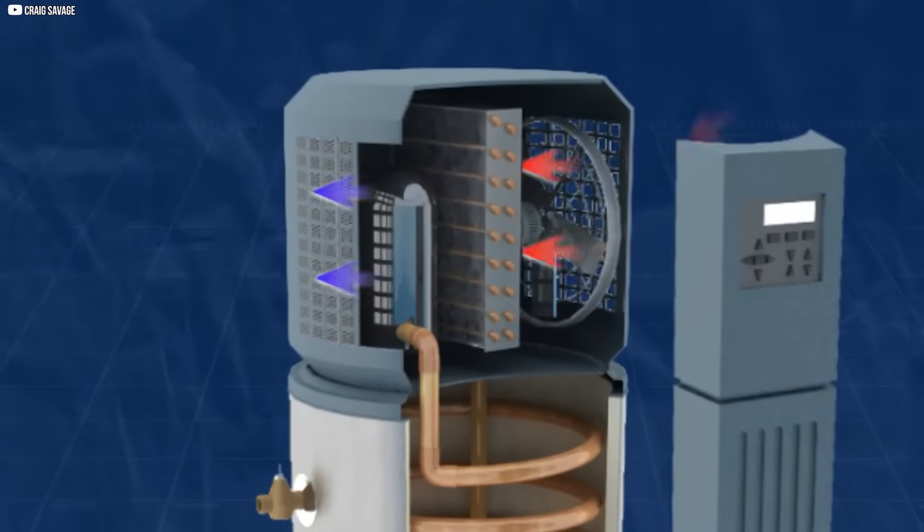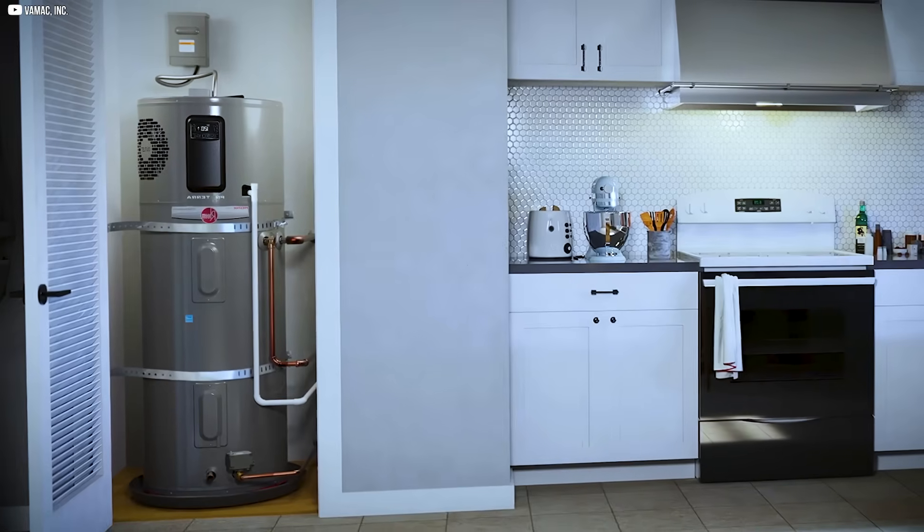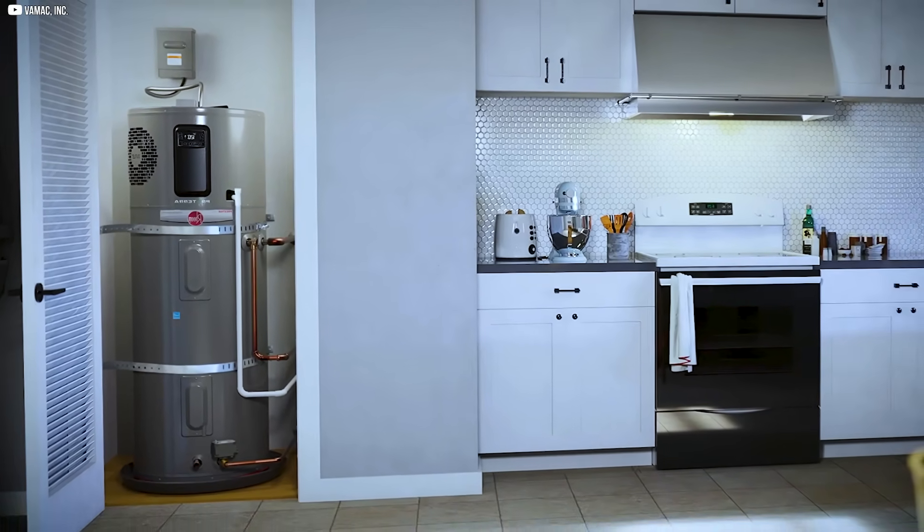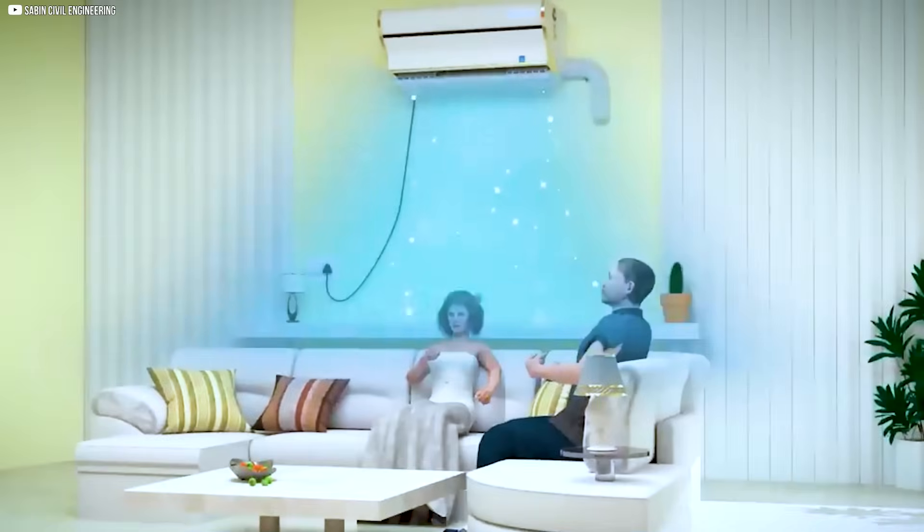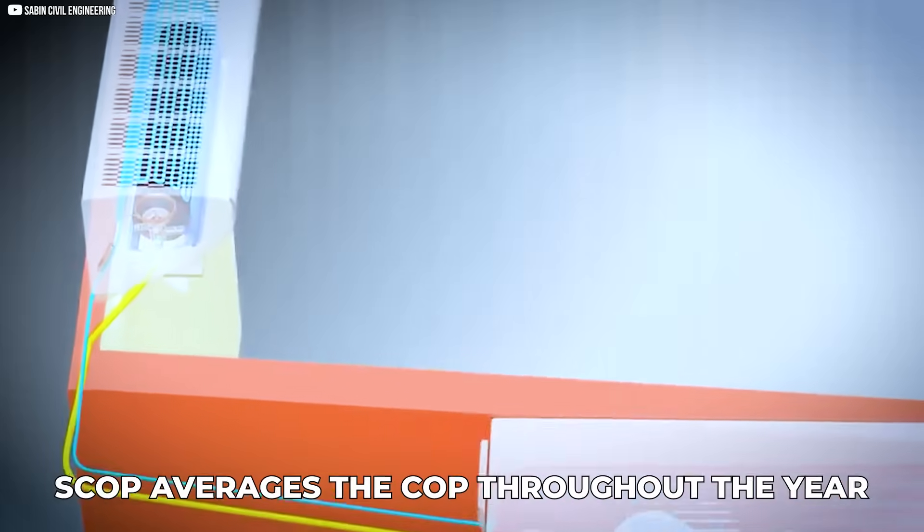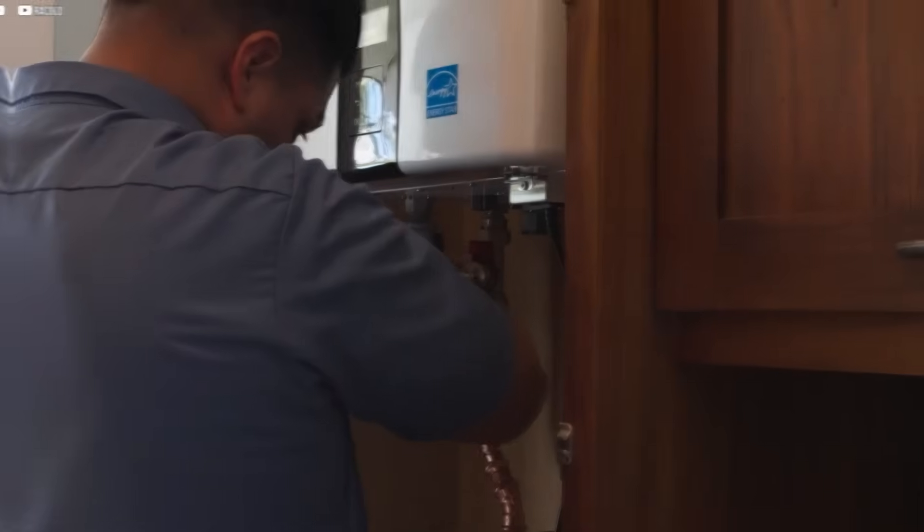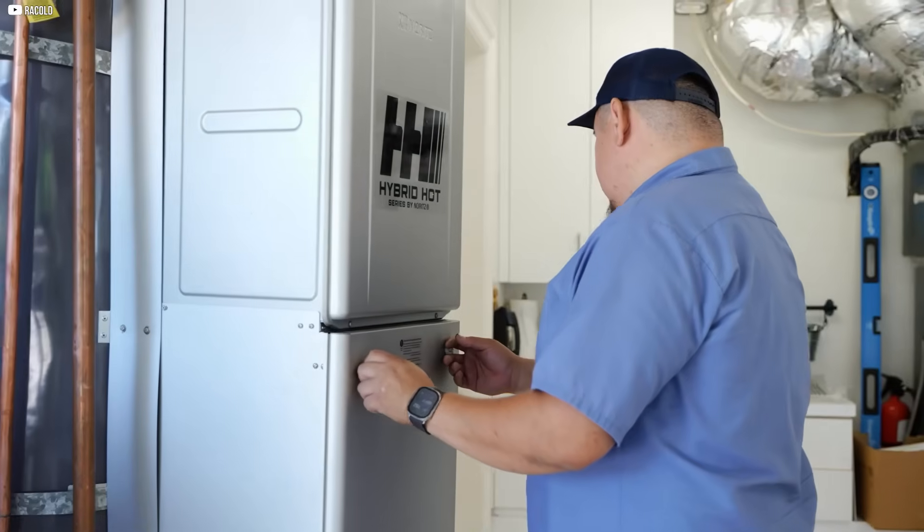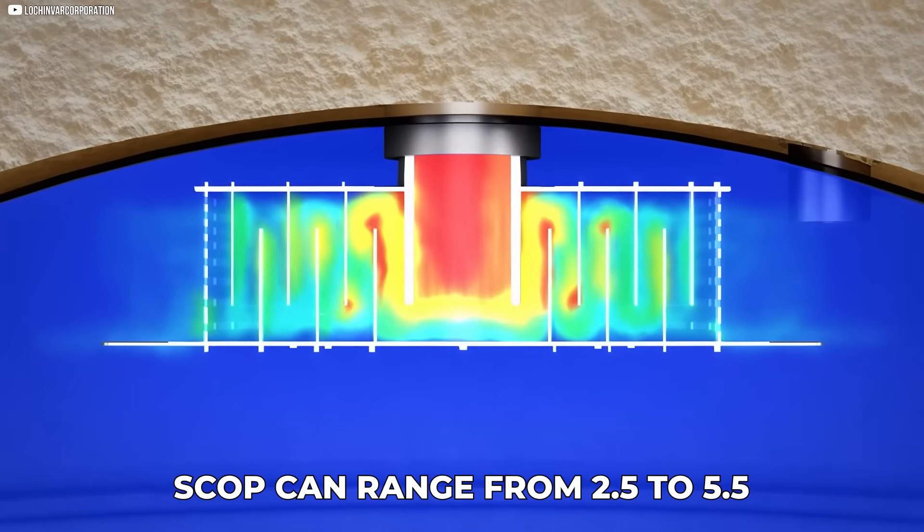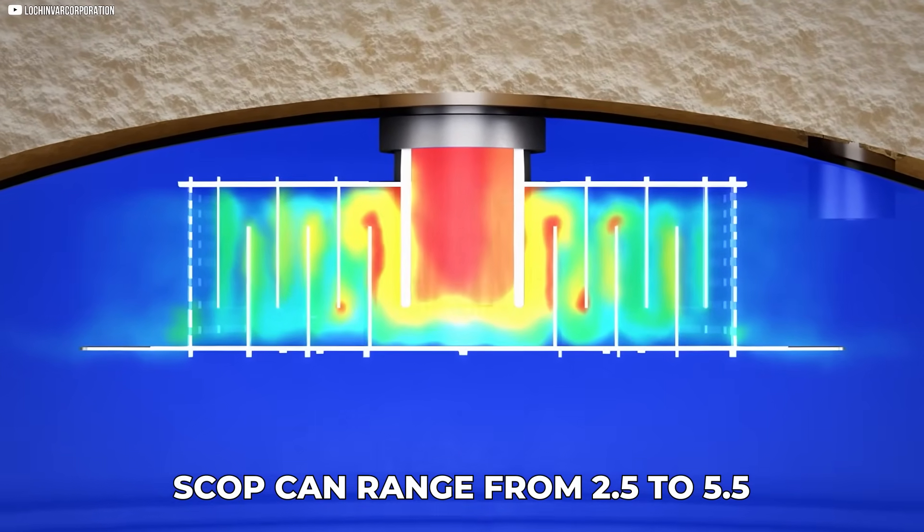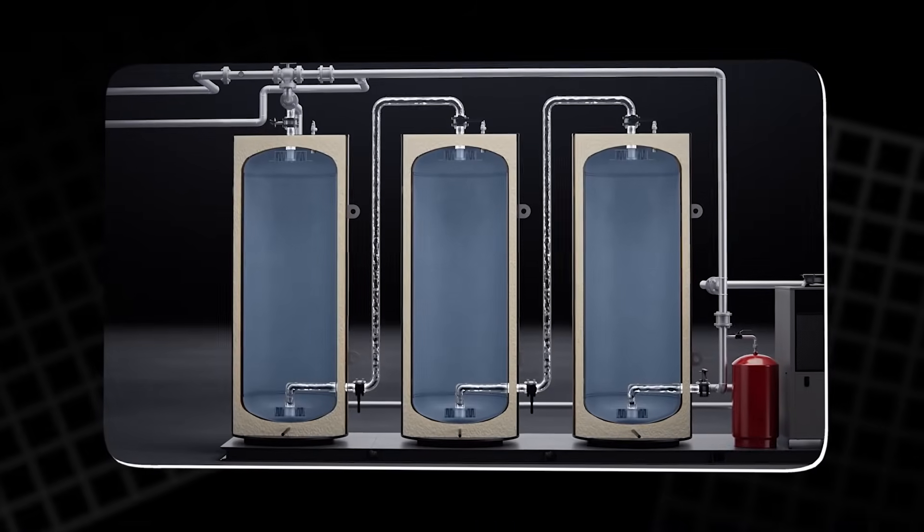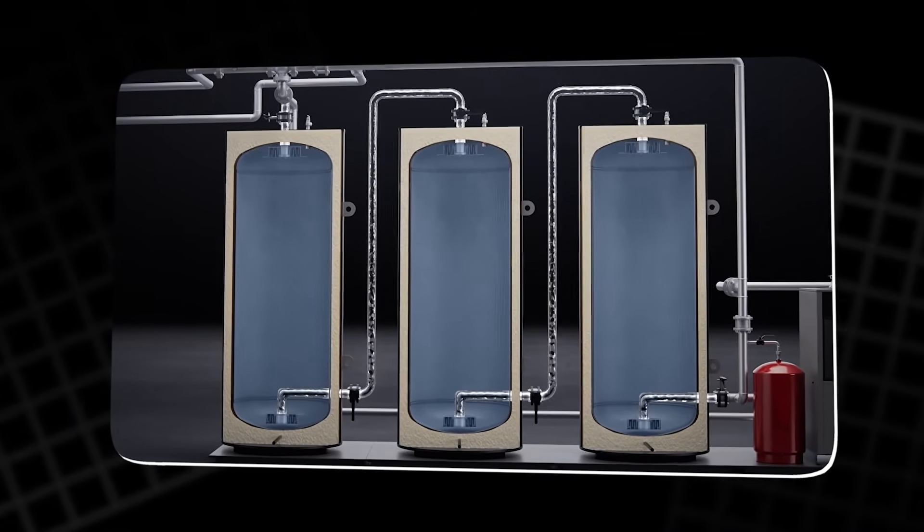However, there's another important metric called SCOP, or Seasonal Coefficient of Performance, which takes into account seasonal temperature fluctuations. SCOP averages the COP throughout the year, reflecting real-world performance. Depending on factors like the type of heat pump and installation, SCOP can range from 2.5 to 5.5, making heat pumps significantly more efficient than traditional gas boilers.